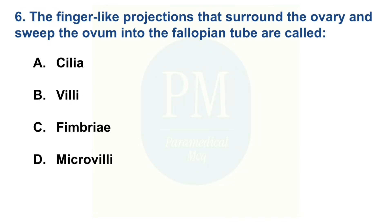The finger-like projections that surround the ovary and sweep the ovum into the fallopian tube are called: Option A: Cilia. Option B: Villi. Option C: Fimbriae. Option D: Microvilli. The correct option is Option C: Fimbriae.